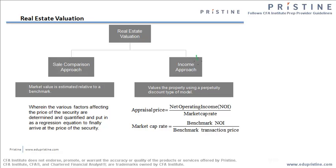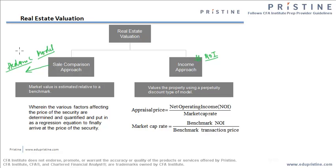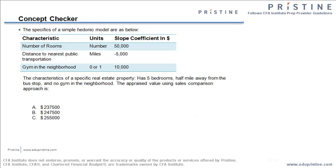The income approach uses the net operating income, and this method is used in real estate valuation in real life. All income-yielding assets in real estate get valued using the net operating income. I will start with the sales comparison approach, which very often uses a hedonic model. This model is a regression model run on different parameters that defines the coefficients of each parameter. Let's take an example to understand it better.